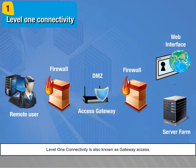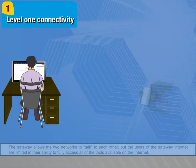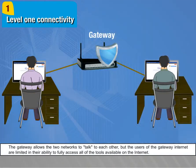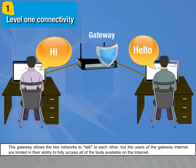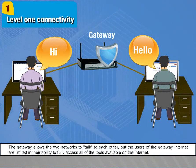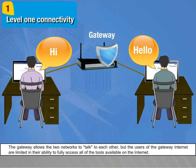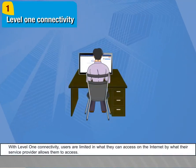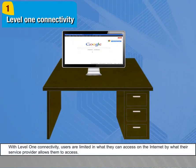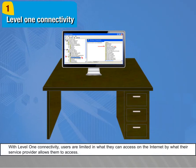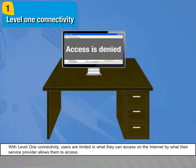Level 1 connectivity is also known as gateway access. The gateway allows two networks to talk to each other, but users of the gateway internet are limited in their ability to fully access all of the tools available on the internet. With Level 1 connectivity, users are limited in what they can access by what their service provider allows them to access.